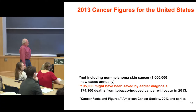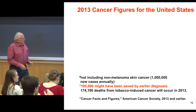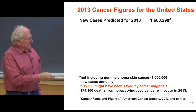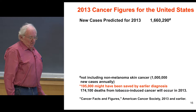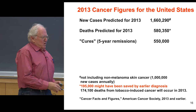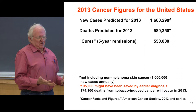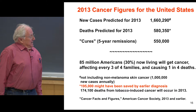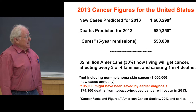Looking at statistics from the American Cancer Society — well over a million new cases predicted for 2013. About a third of the people diagnosed will die from cancer. 'Cures' are in quotes because it's defined as a five-year remission, but the cancer can come back after five years. If you're cancer-free four or five years, it's a good chance you are cancer-free. Most of you have probably been affected — family members or friends have had cancer.